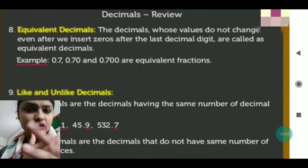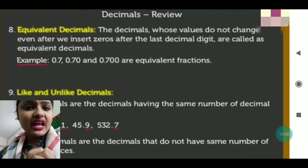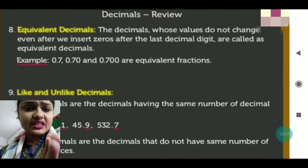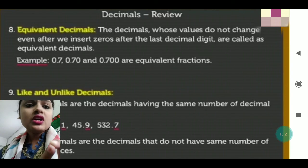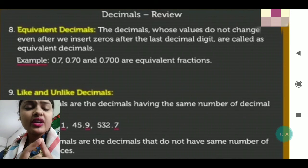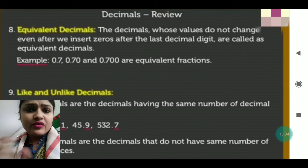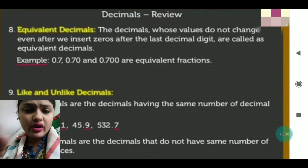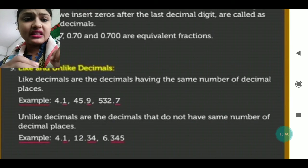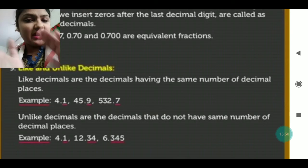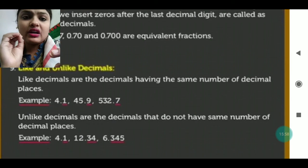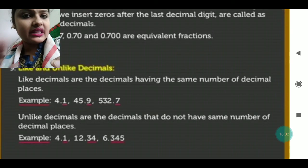Equivalent decimals are decimals whose values do not change even after inserting zeros after the last decimal digit. For example, 0.7, 0.70, and 0.700 are all equivalent fractions. Like fractions are decimals having the same number of decimal places, while unlike fractions have unequal decimal places.